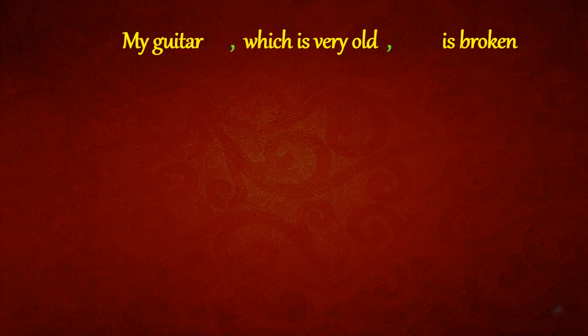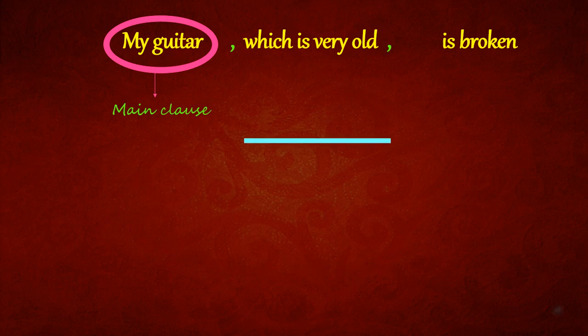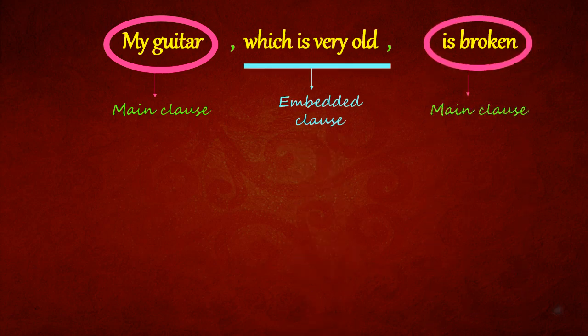Let's consider the example: my guitar which is very old is broken. My guitar in the given sentence is the main clause. Which is very old is the embedded clause. Is broken is another main clause.